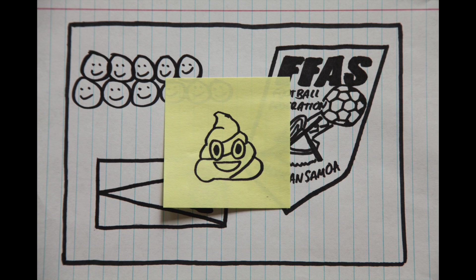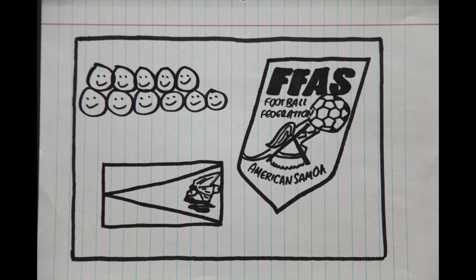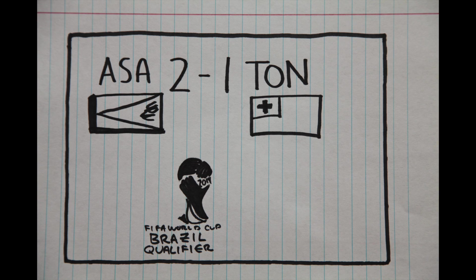But lest you think this is just about shitting all over American Samoa, we've got to talk about what happened after that 29th loss. Well, on November 22, 2011, American Samoa earned its first ever victory as a FIFA member in a 2-1 defeat of Tonga in a 2014 World Cup qualifying match.